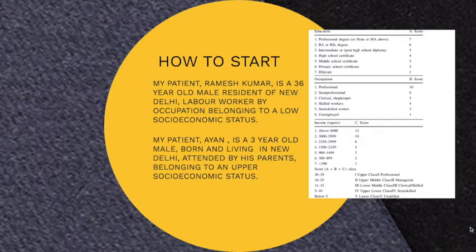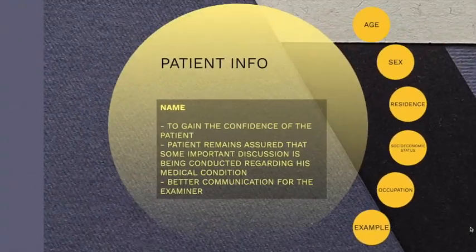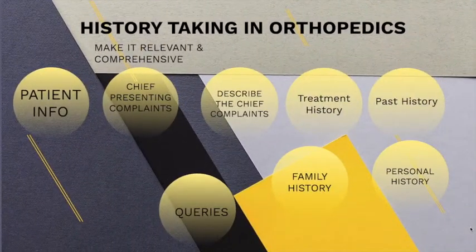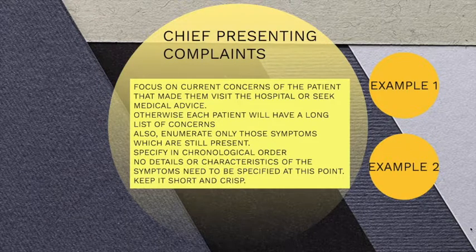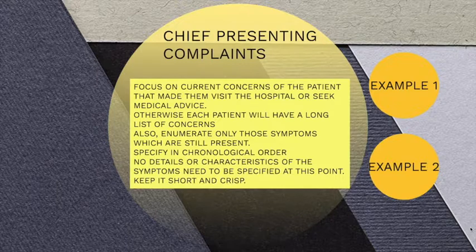The chart shown on the right side is one of the standard charts and can be used. Then coming to the chief complaints — you have to focus on the current concerns of the patient that made them visit the hospital. Enumerate only those symptoms which are still present, specify them in chronological order, and no details or characteristics of the symptoms need to be specified at this point.